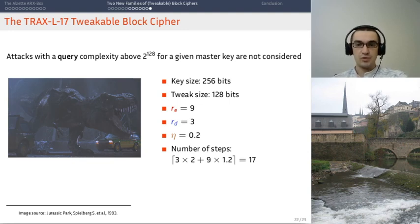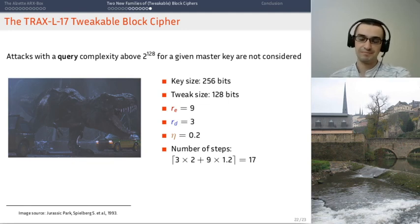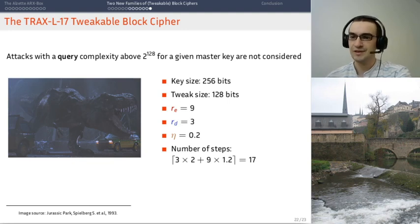We have put a bound on the query complexity of the attacks. So, an attacker can try as many keys as they want, but they cannot use more than 2 to the power 128 known or chosen plain texts. That's the idea. So, it's just not realistic to allow the adversary to query the keyed Oracle as many times as they want, and doing so would lead us to use too many steps in the primitive, so we have chosen to give it a very, very conservative bound and work from there.